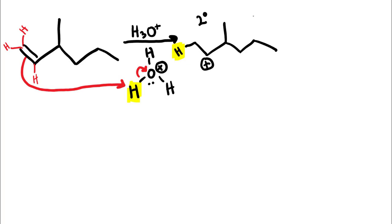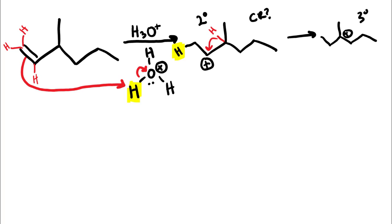Any time we form a carbocation we ask: is it going to rearrange? We look at the adjacent carbons and ask whether the carbocation would be more stable if it moved. In this case it would — if we move the carbocation to that position it becomes tertiary. So we do a hydride shift, moving the carbocation to the more stable, more substituted, tertiary position. Now that we have our tertiary carbocation, we proceed with nucleophilic attack. Water is acting as our nucleophile, so we draw the water molecule with its lone pairs. Remember, a carbocation is flat — sp2 hybridized, trigonal planar, like a piece of paper — so it can be attacked from the top face 50% of the time and from the bottom face 50% of the time.